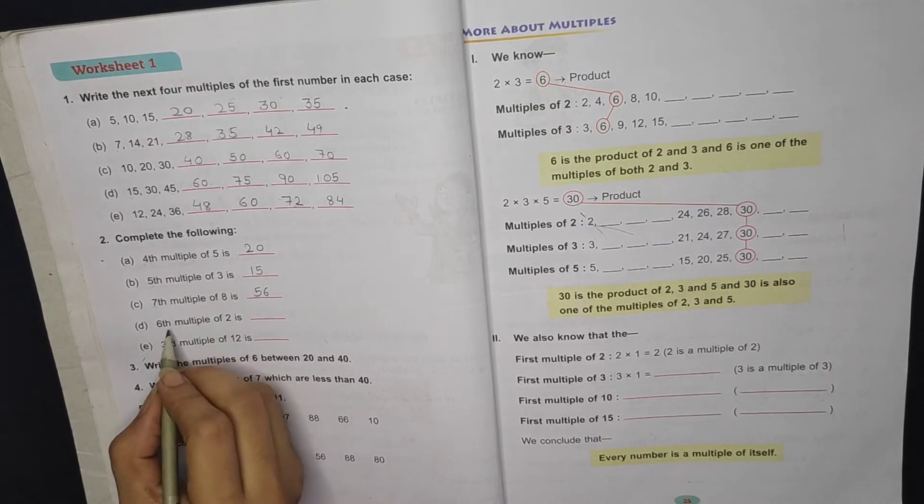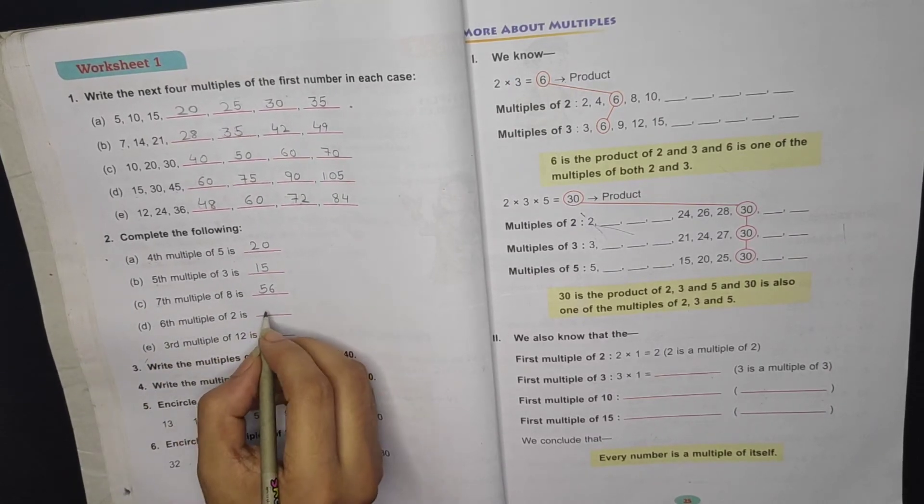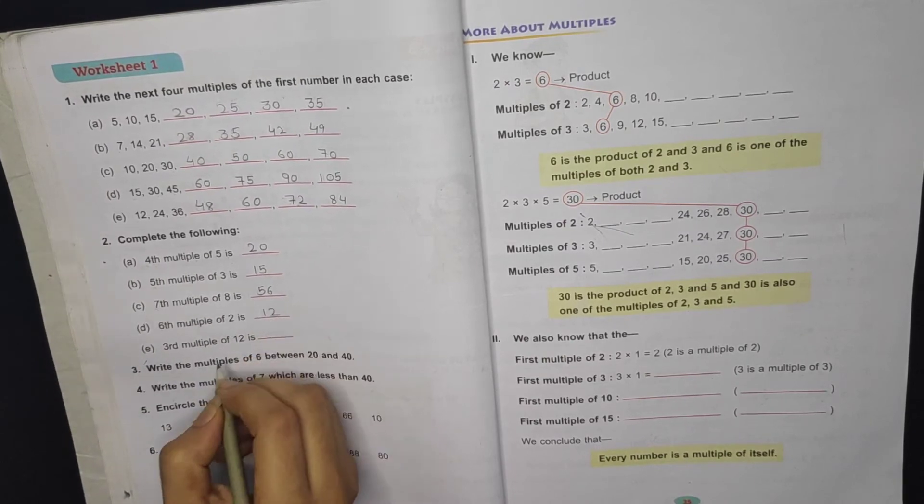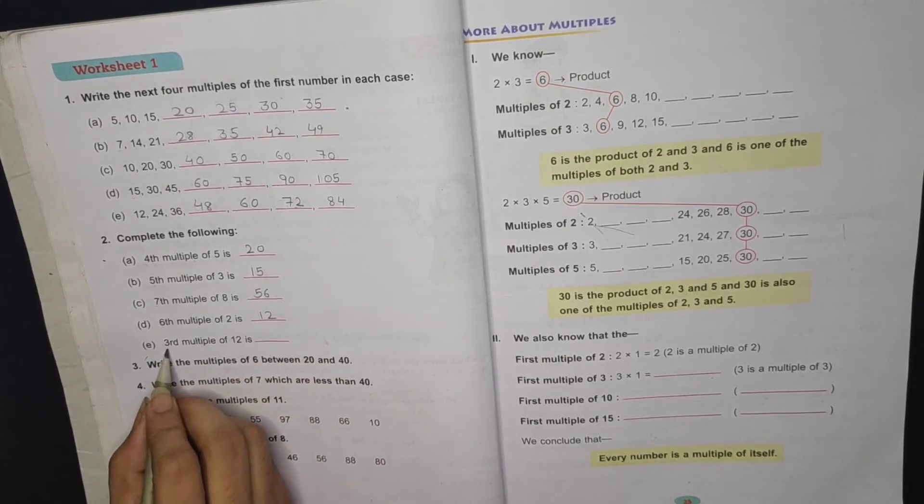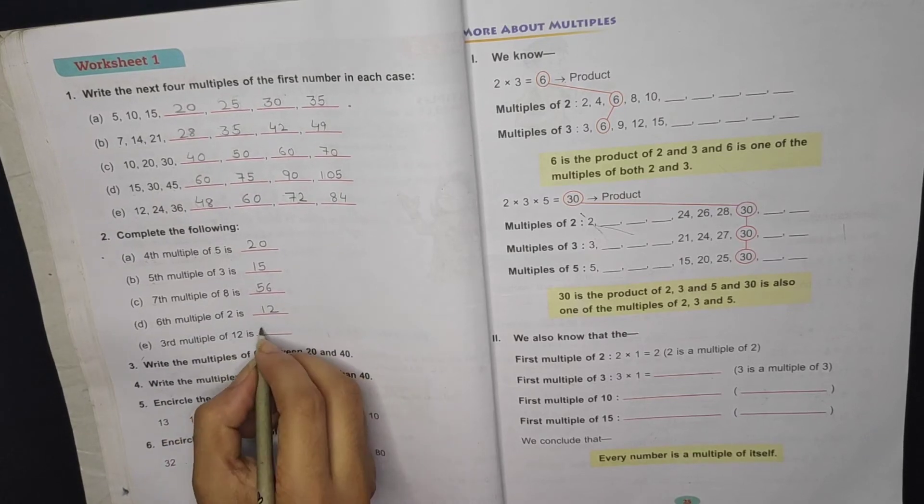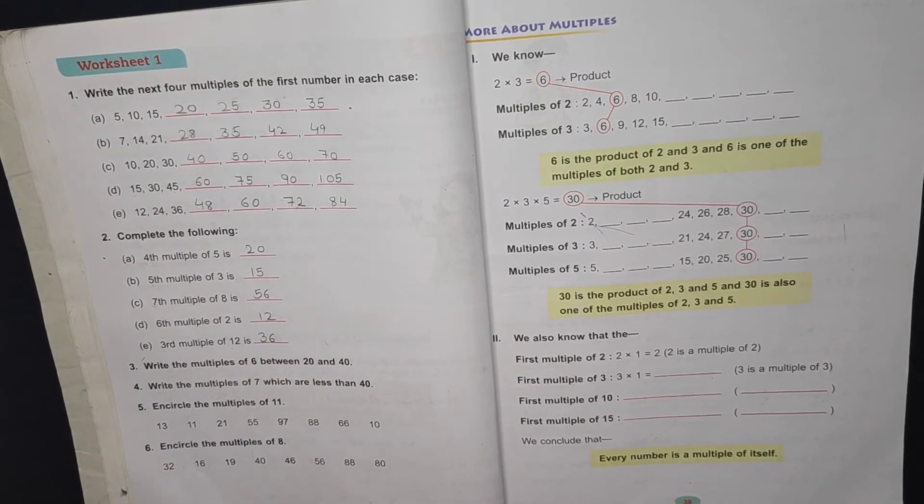6th multiple of 6, that means 6 times 6 will be 36. Then 3 times 12, 12 times 3 are 36.